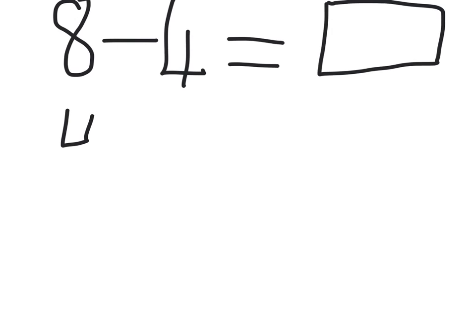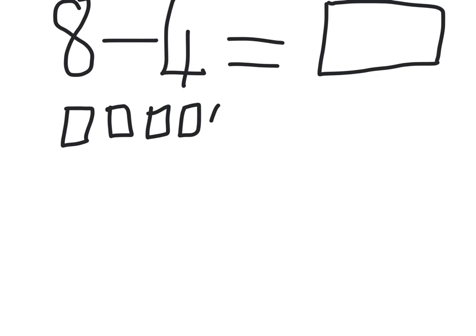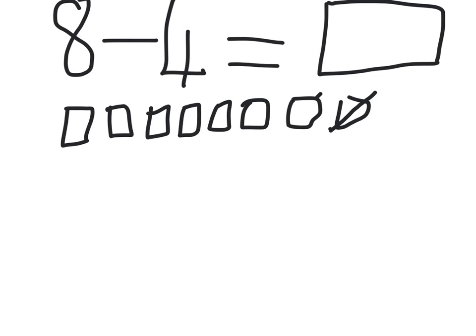1, 2, 3, 4, 5, 6, 7, 8. So I've drawn 8 Dienes. Now I need to cross out 4 of them.